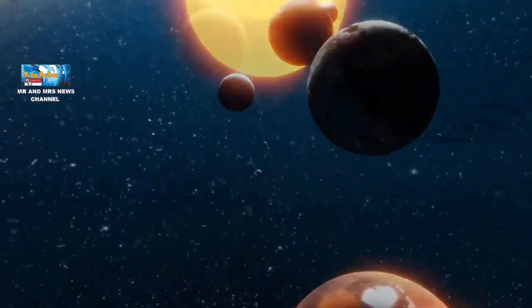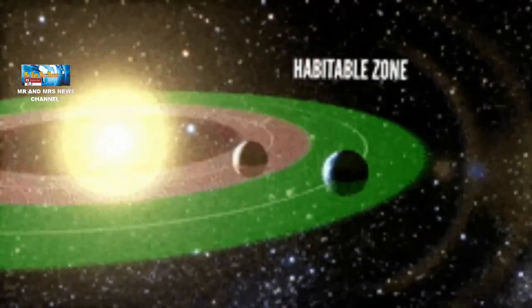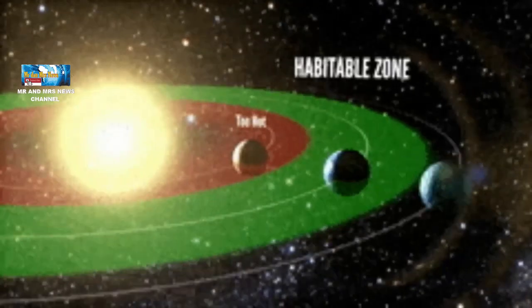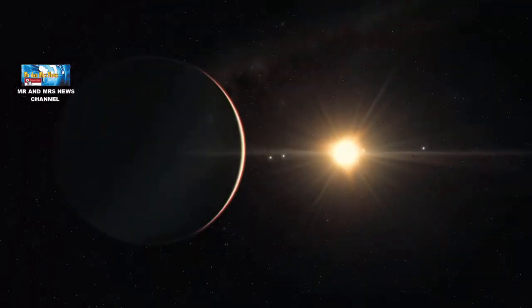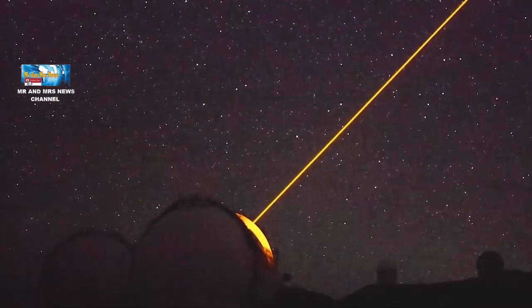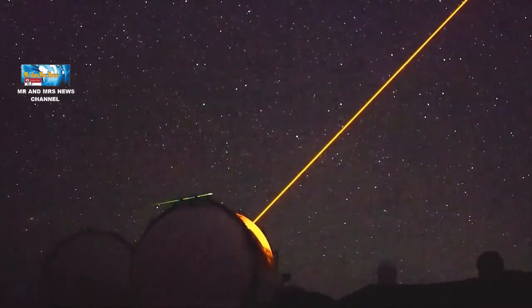Zona layak huni ini sebuah planet di mana planet tidak panas dan tidak dingin membeku dan tentu saja berbatu. Nah, begitulah penjelasan singkat terkait planet superbumi yang ditemukan dalam zona layak huni yaitu ROS-508D.